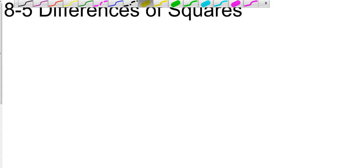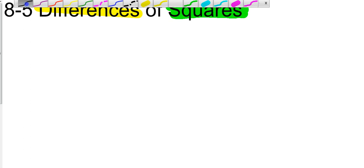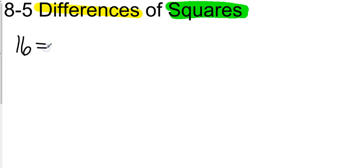8-5: Differences of Squares. The biggest keyword here is 'differences,' which means subtraction, so we're going to look at some subtraction factoring problems. The second keyword is 'squares,' and we're looking at things that are perfect squares. For example, 16 is a perfect square because it's 4 times 4, and 25 is a perfect square because it's 5 times 5.